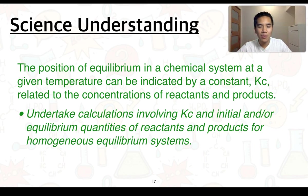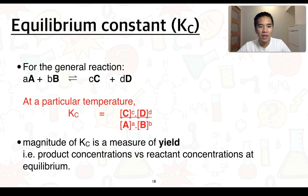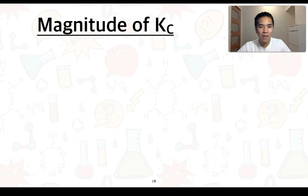This covers initial and/or equilibrium quantities of reactants and products for homogeneous equilibrium systems. In the first part of 2.2, I introduced the idea that for a general reaction we can write an expression for the equilibrium constant. I mentioned that the magnitude of Kc is a measure of the yield, but we didn't look at that in further detail.